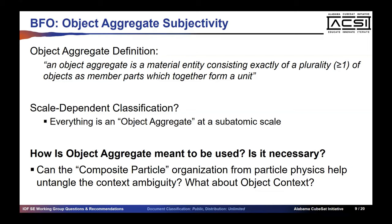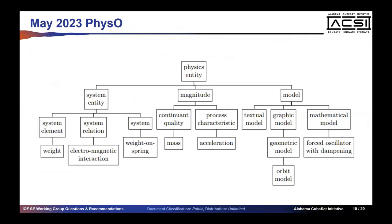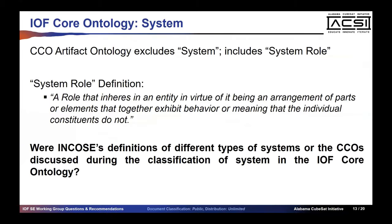We only have five minutes left. I agree. Most of what the rest of the presentation includes covers what we've already discussed here. System role — a role that inheres in an entity in virtue of its being an arrangement of parts. I think this is a good definition of what you're getting at with system role. System role may be the appropriate way to define the concept of systems under roles. My bigger point is that systems may not be taxonomized themselves. We can describe systems, but I'm not sure that trying to taxonomize the wide world of what could and could not be a system under an independent continuant of system is the right way to go.